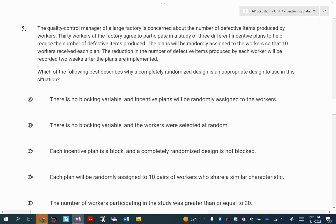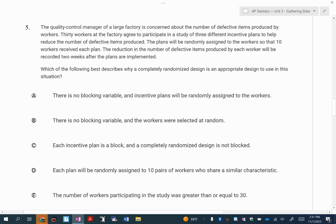Now five and six we actually did well on. I'll just quickly make sure we understand here. Which of the following best describes why it's a completely randomized design? That's because there is no blocking variable. They're not separating these workers in any way. They're not separating based on like the work that they do or the time of day of their shift. This is just they're just randomly assigning them, and the experiments were randomly assigned to the workers.